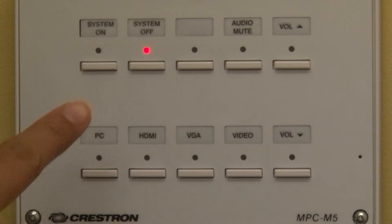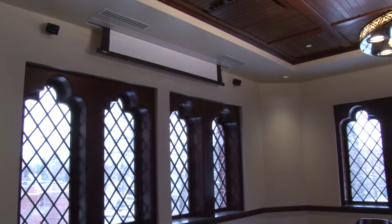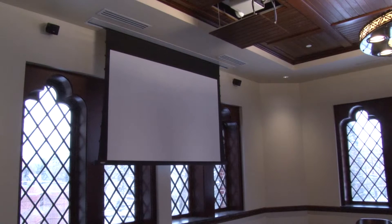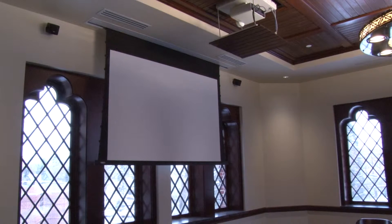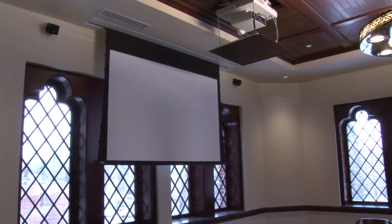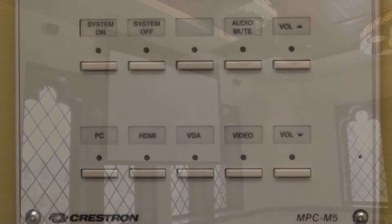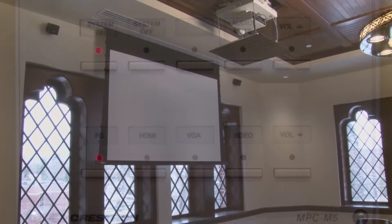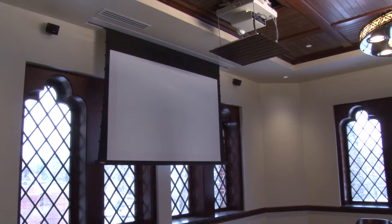To begin, press system on. This will automatically lower the projector and screen and turn on the projector. The system off button will start flashing until the system on button lights up. It takes about 90 seconds for the projector to reach full brightness.